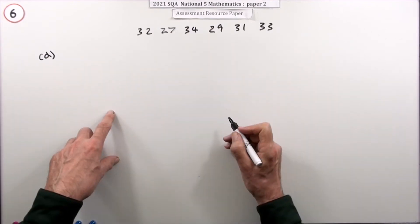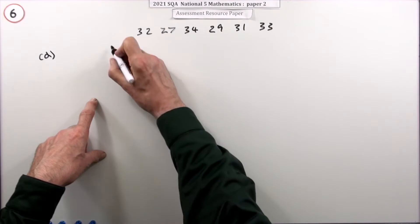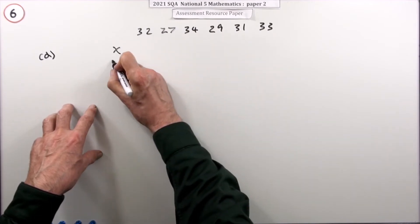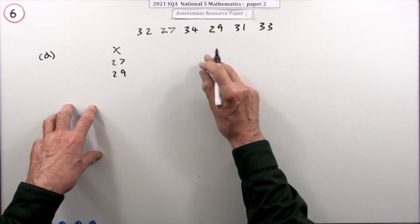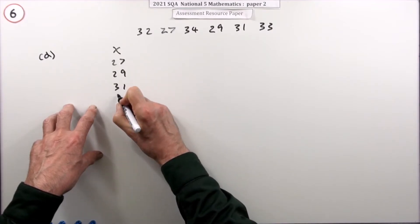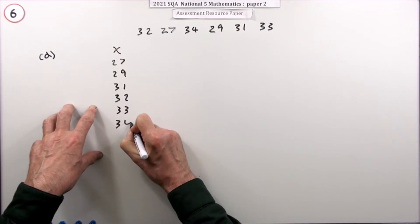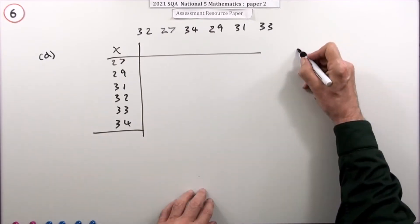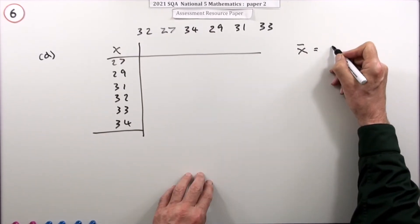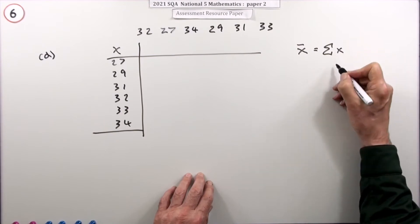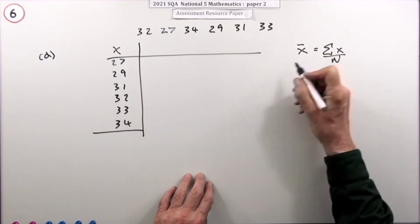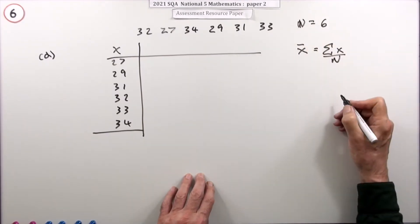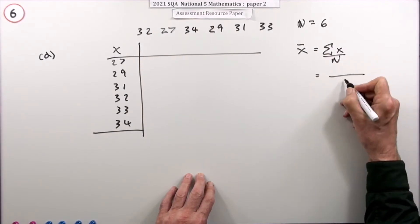You don't need to set them out in a particular order, but I think it's easier to put your x's - the original numbers - in numerical order. So I've got two 20s, then 27, 29, and then the 30s: 31, 32, 33, and 34. I'll set this up as a table. The mean is the sum of all these numbers - sigma x - divided by how many there are. There are six of them, so n equals 6.